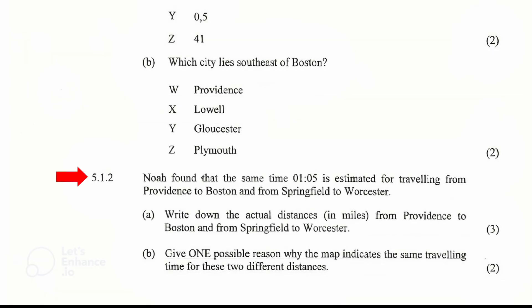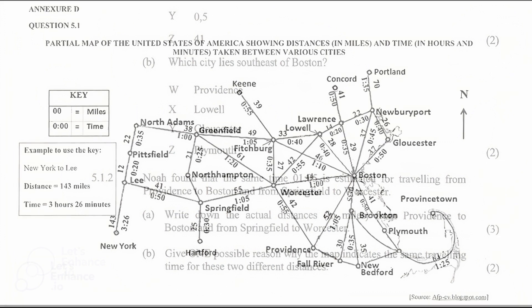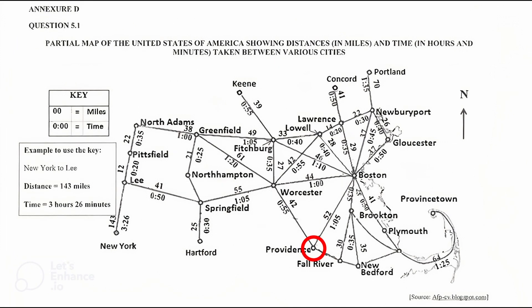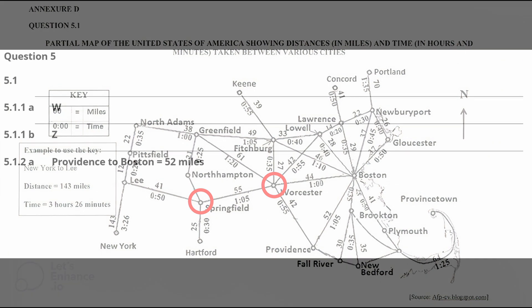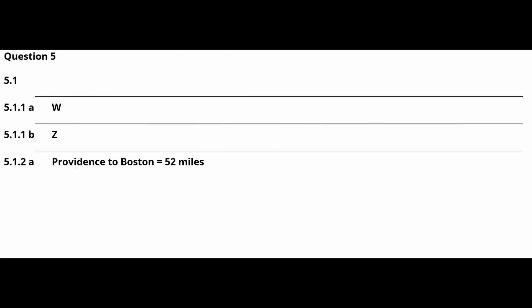5.1.2: Noah found that the same time of one hour and five minutes is estimated for traveling from Providence to Boston and from Springfield to Worcester. (a) Write down the actual distance in miles from Providence to Boston and from Springfield to Worcester. From the map in Annex D, the distance from Providence to Boston is 52 miles and from Springfield to Worcester is 55 miles.